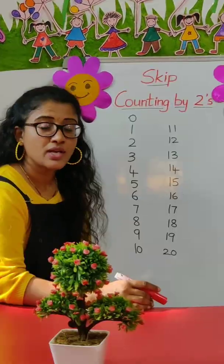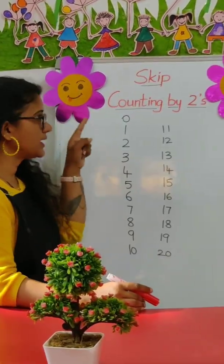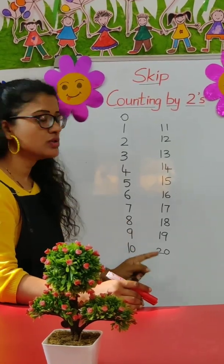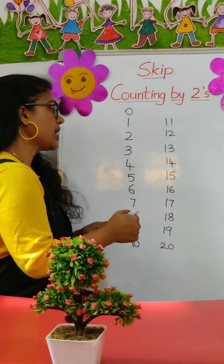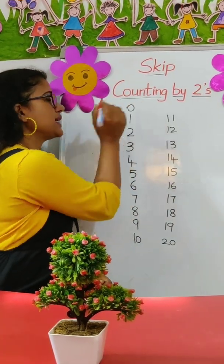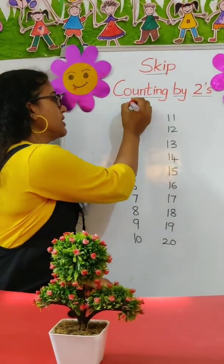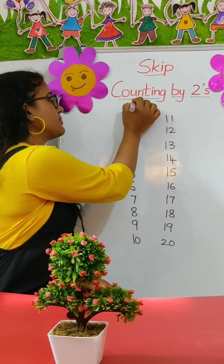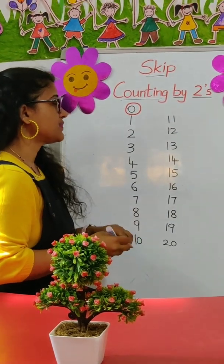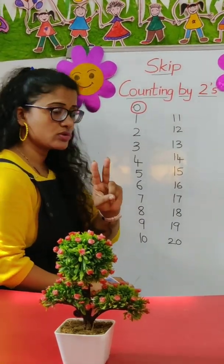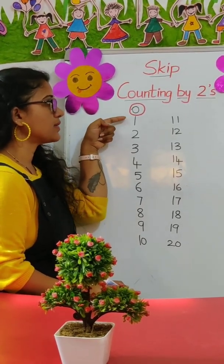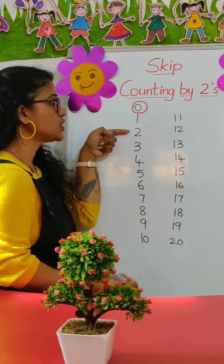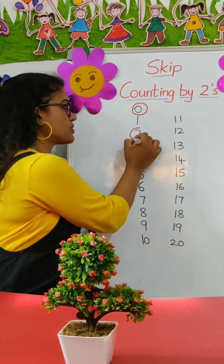Now let's see one more example. Let's do the skip counting from zero to twenty. I am going to start from zero. Let's circle the numbers. Today's class we are doing skip counting by twos — you have to jump to the second number. One, two. So I am going to circle two.